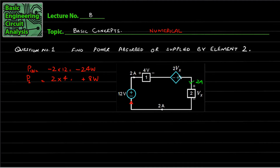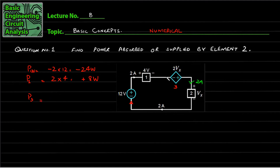This is a voltage-dependent voltage source. Here you have the voltage VX, which will cross this component, and that voltage will be multiplied by 2. So this will be the voltage source. Power in component number three: current is entering on the negative side, so I take negative 2 ampere and the voltage is 2 into VX. This will be minus 4VX.